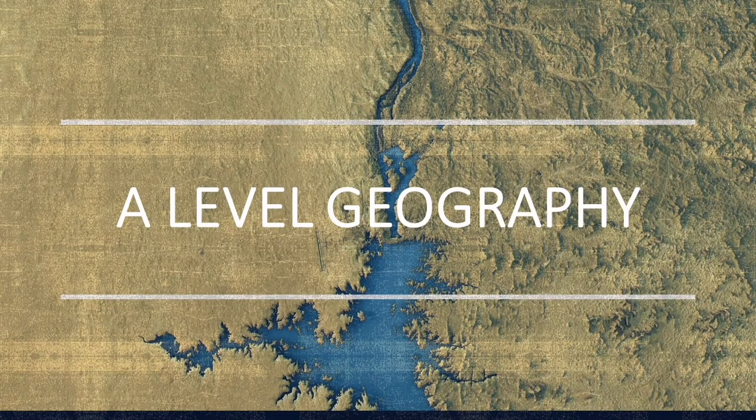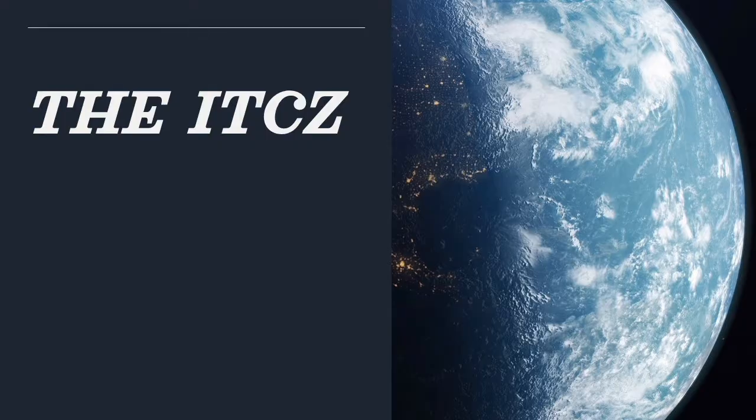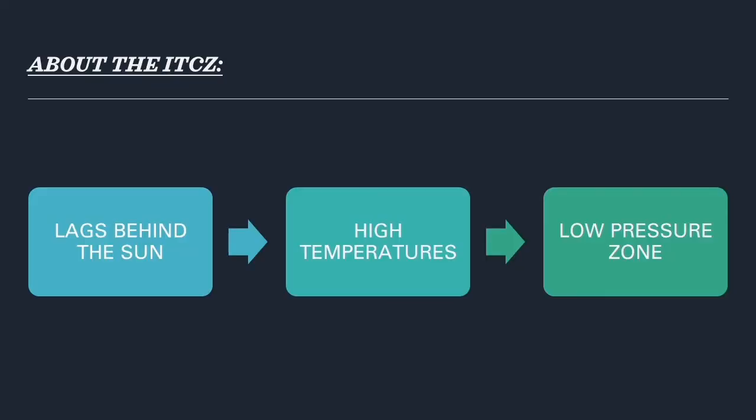Welcome back to my YouTube channel. In this video I'm going to look at the ITCZ in depth, which is under tropical environments. The ITCZ basically moves with the sun — wherever the sun moves to, the ITCZ tends to follow. The sun produces a lot of heat, meaning the ITCZ is an area of high temperatures and low pressure, and being an area of low pressure the ITCZ attracts surface winds, which explains why it is also associated with high humidity levels.